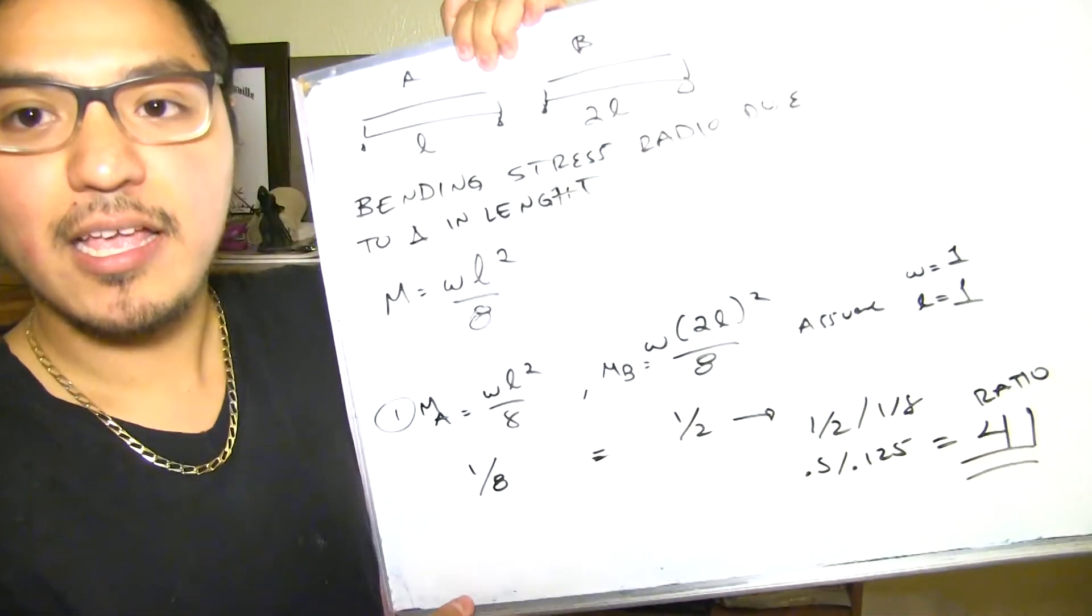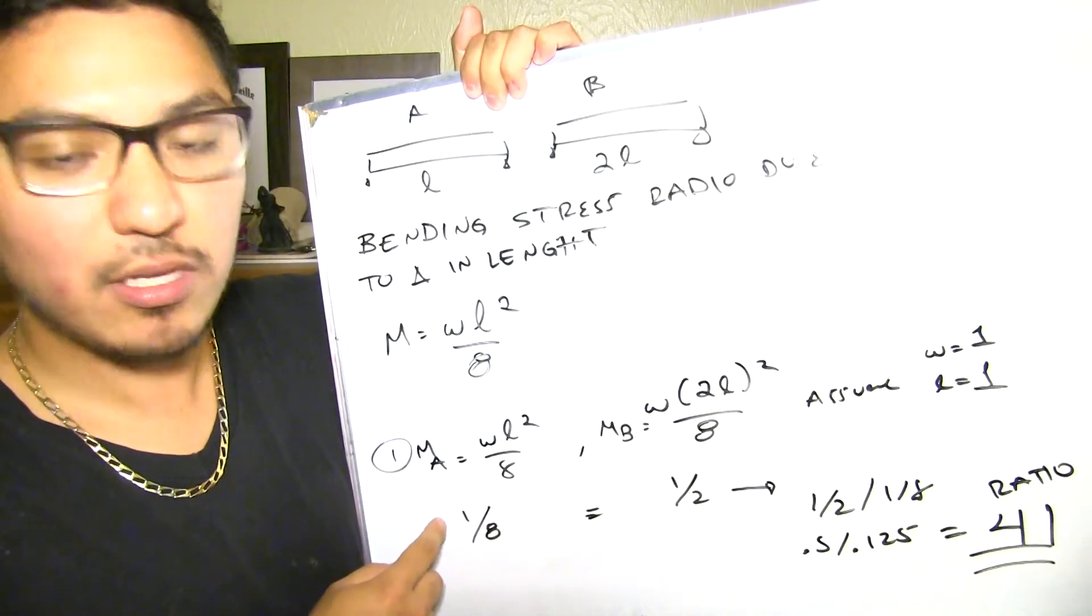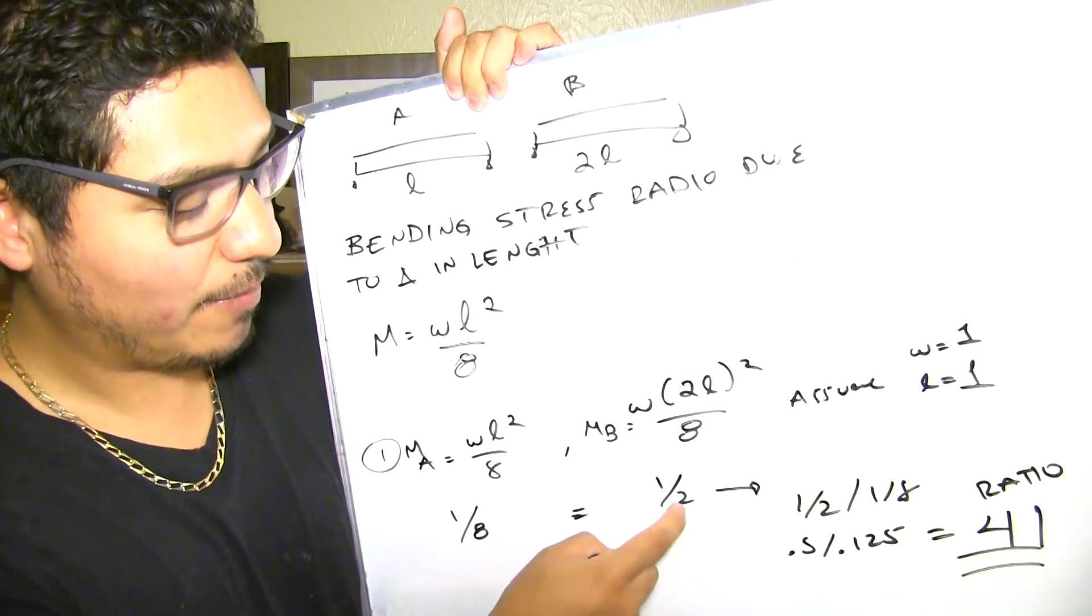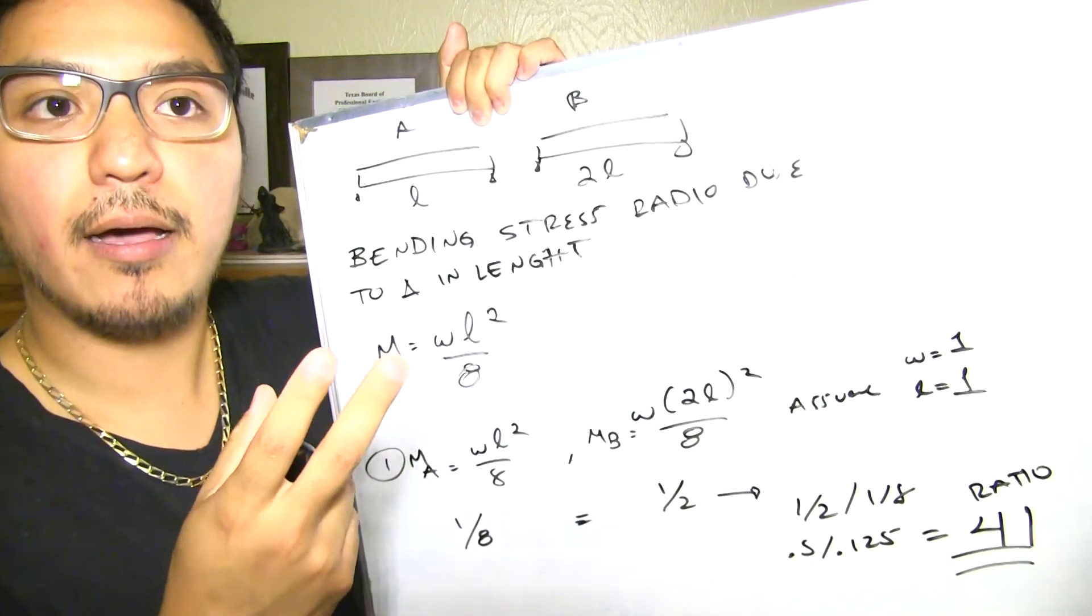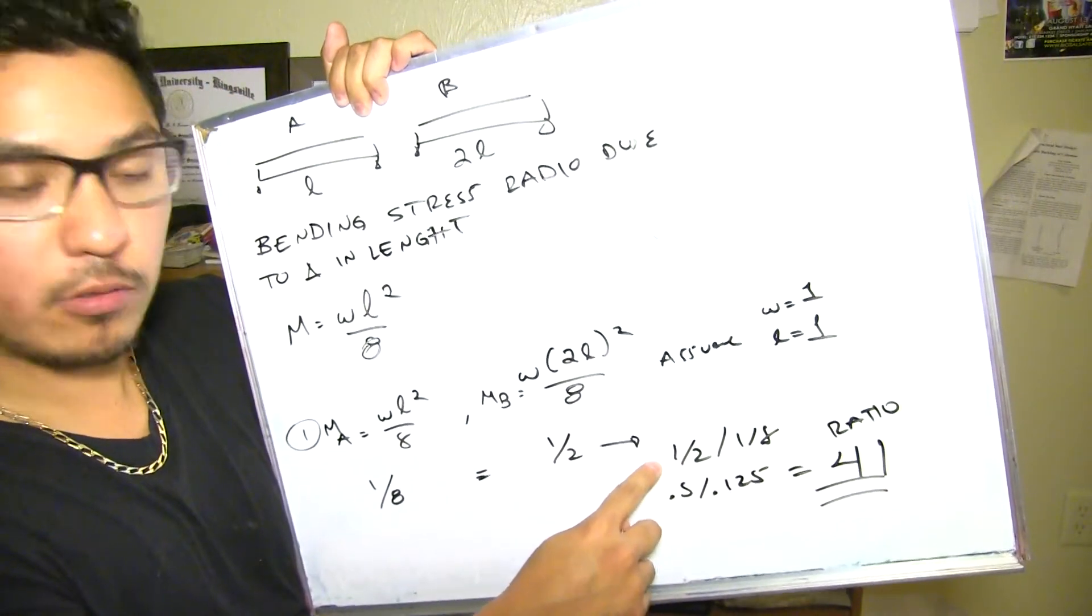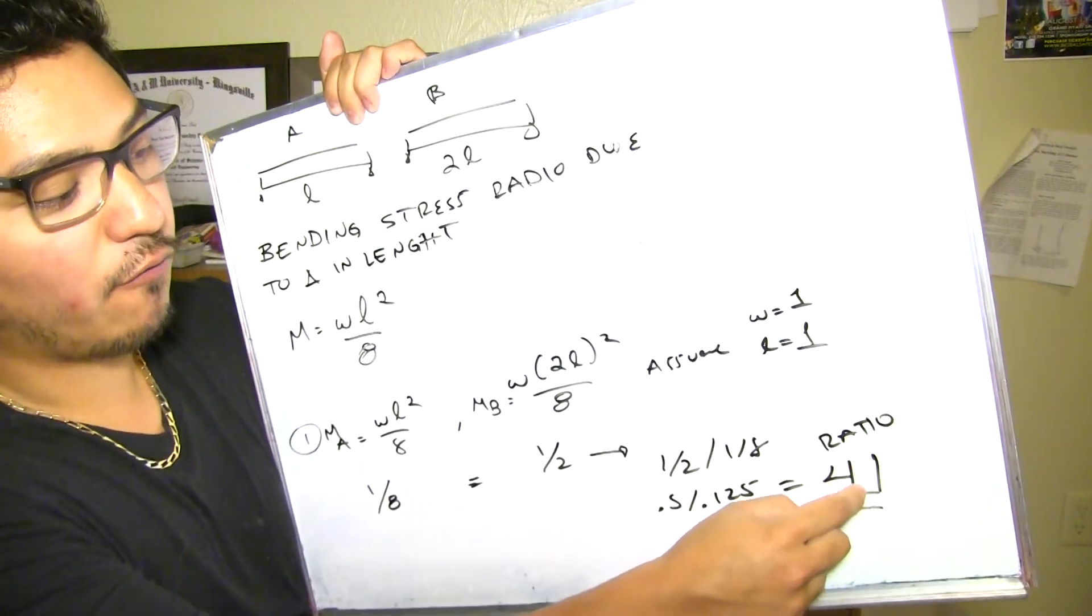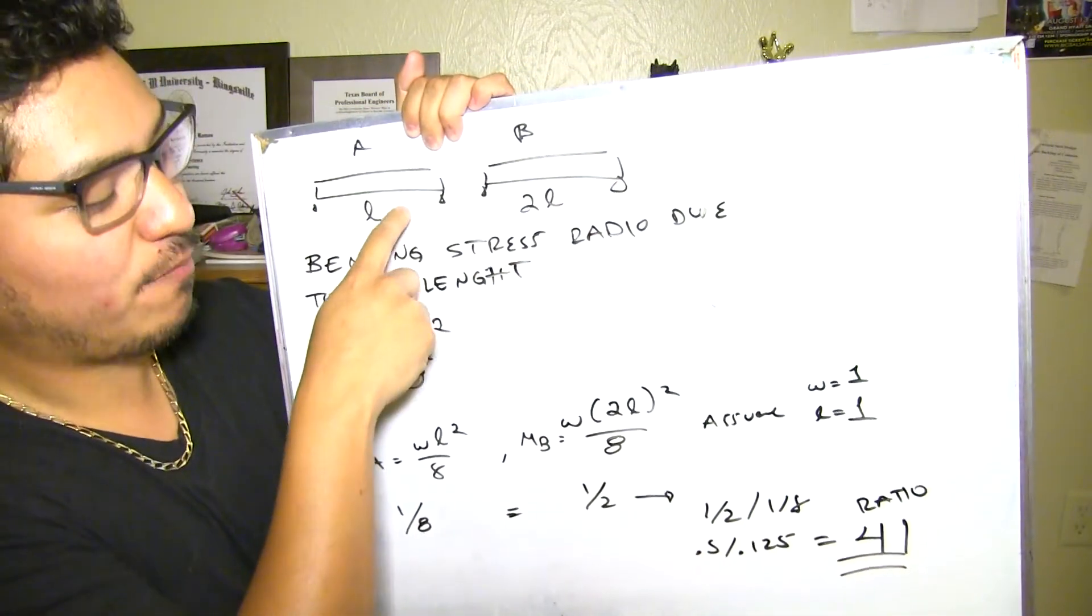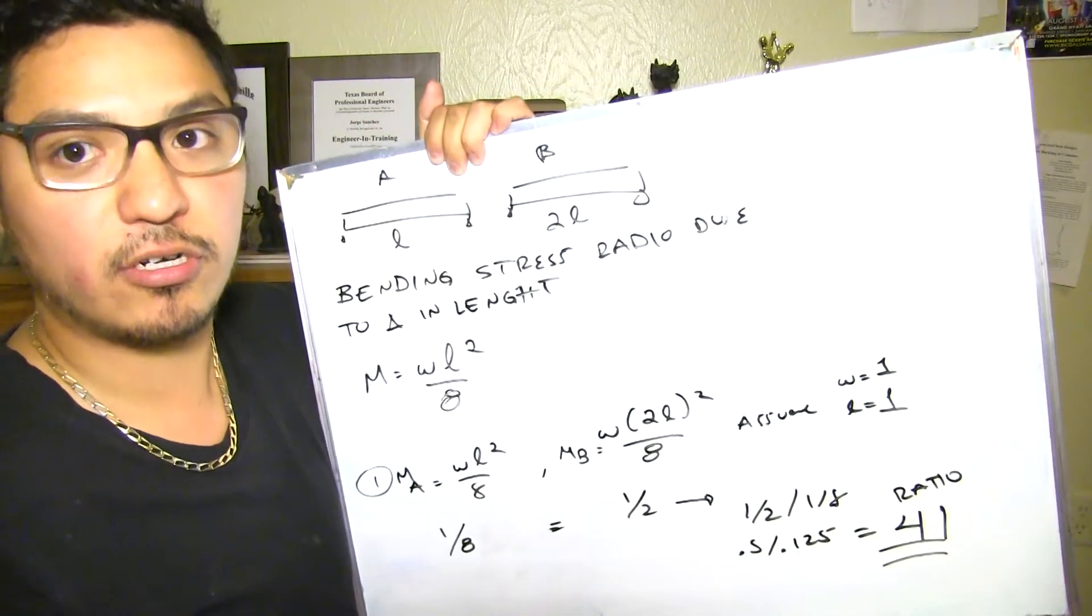And after that I just got the ratios. For this I got 1/8. This was my solution for moment A. And then this was my solution for moment B. Then I just divided them. I divided this value over this value to get a ratio, which tells me how different they are and by what factor. So 1.5 over 1/8, or 0.125, gives me a ratio of 4. So basically that means the maximum moment in this beam is four times bigger than this one, just because you double the length even if all the other conditions stay the same.